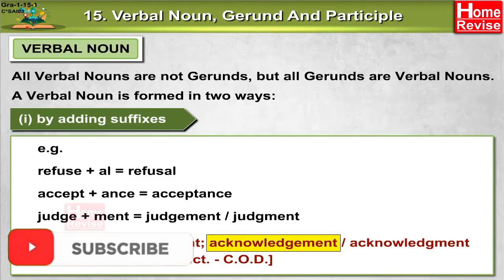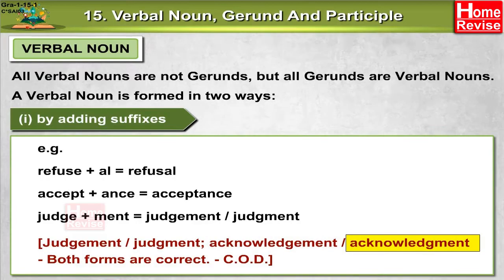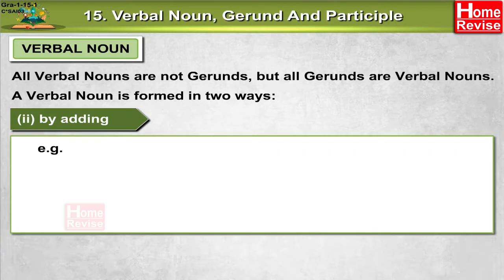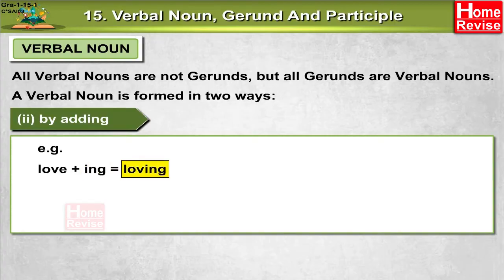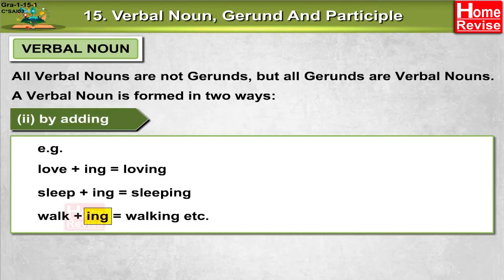Note that 'acknowledgement' can be spelled A-C-K-N-O-W-L-E-D-G-E-M-E-N-T or A-C-K-N-O-W-L-E-D-G-M-E-N-T — both forms are correct. Second, a verbal noun is formed by adding -ing. For example: love plus -ing makes loving; sleep plus -ing makes sleeping; walk plus -ing makes walking.